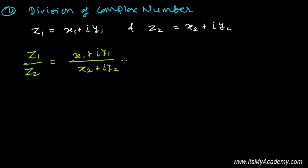So let's conjugate it: (x2 - iy2) divided by (x2 - iy2). Now my friend, don't you see this is just like the product of two complex numbers.